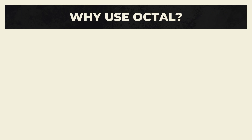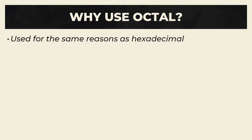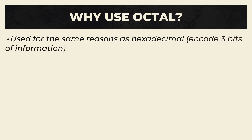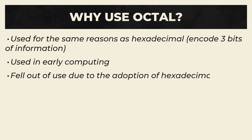Finally, octal. Octal was used for the same reason as hexadecimal. It was somewhat easier to parse, and could convert well to binary because 8 is 2 to the 3rd power. Because of this, one octal digit encodes 3 bits of information, as opposed to hexadecimal's 4. This property was useful in early computing, when 3-bit numbers were more widely used. However, 3 bits doesn't cleanly divide 8 bits. With the byte becoming the standard for things like ASCII text, hexadecimal started to become the favored number system. Other than the use of less symbols, which leads to fewer errors, there weren't really any special advantages that octal had over hexadecimal.